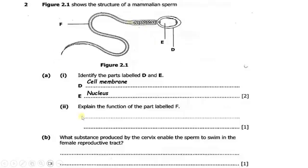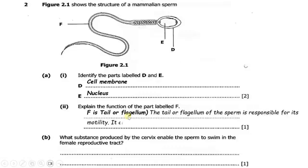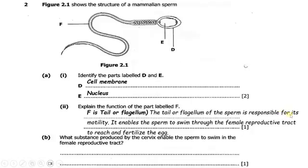Part A, number 2: explain the function of the part labeled F. Part F is the tail, also known as the flagellum. The tail or flagellum of the sperm is responsible for its motility. It enables the sperm to swim through the female reproductive tract to reach and fertilize the egg.